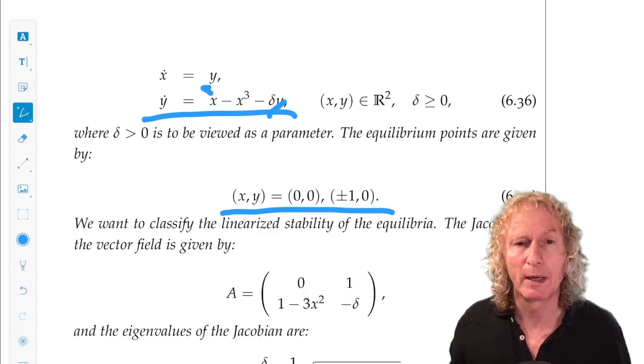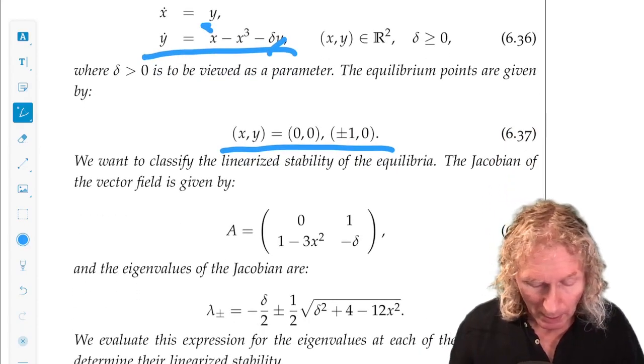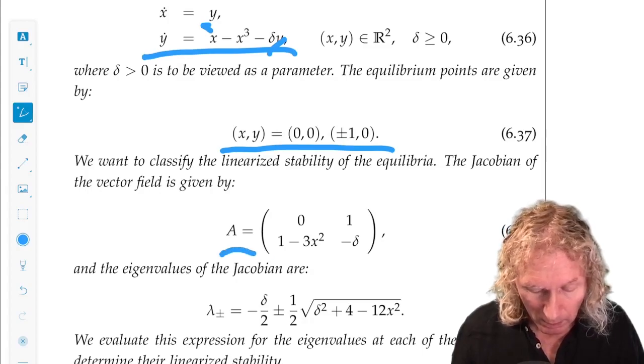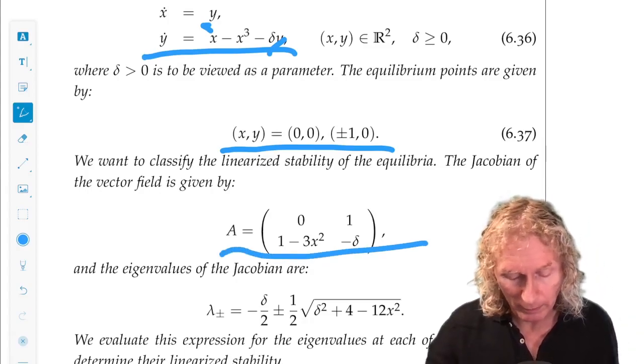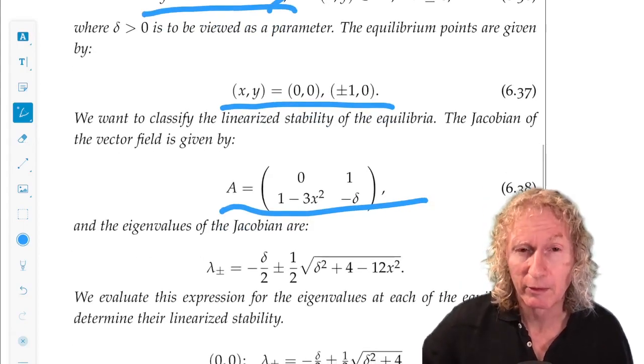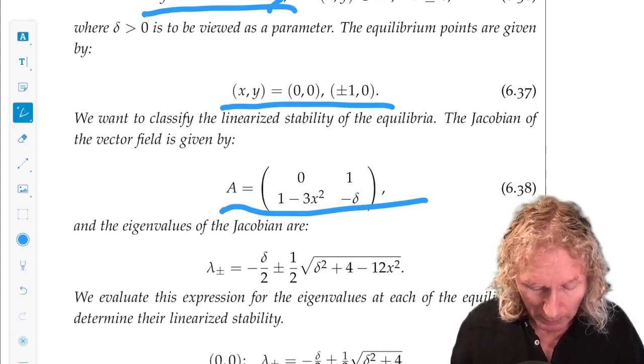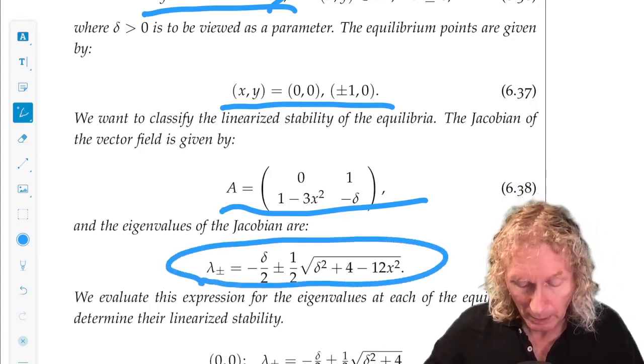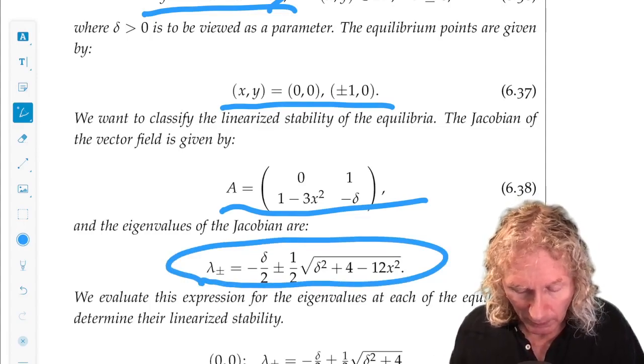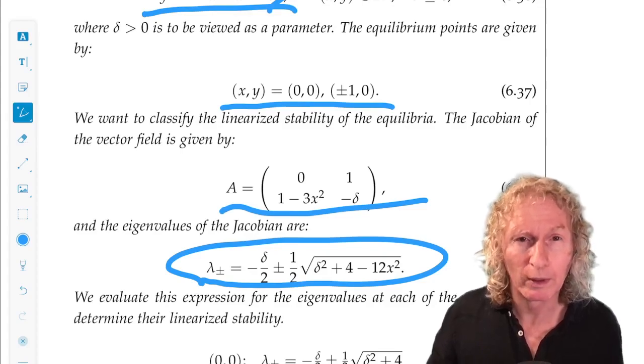Now we can linearize about those and check the linearized stability. The Jacobian of the vector field without evaluating it on one of the three equilibria is given by this expression. And it's a two-by-two matrix, and we can compute the eigenvalues explicitly. And we see that it involves x squared, and when we want to evaluate it on one of the equilibrium points, we need to just put in the appropriate value of x.